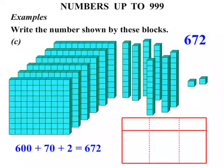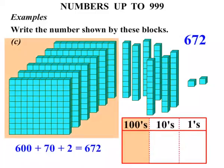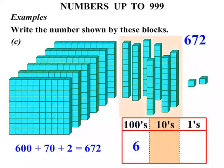Now using our table with columns: ones, tens, hundreds. How many hundreds did we have? We had six. How many tens did we have? We've got seven. And how many ones? Two. So we're looking at the number there, 6, 7, 2, six hundred and seventy-two.